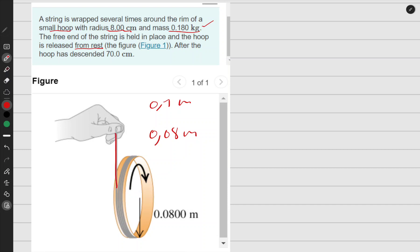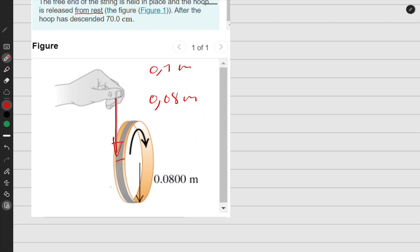As this is released, it goes down. It was somewhere here and then descended 0.7 meters. Moving from point A to point B, the hoop lost its potential energy. At point A it had potential energy, and when it's down here it doesn't have potential energy—it's lost its potential energy to make kinetic energy.